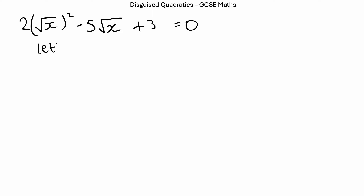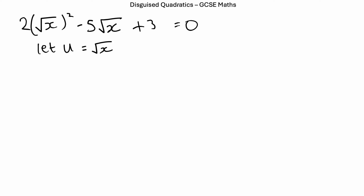What we're going to do is — it kind of feels like you're cheating the system. We're going to let the letter u equal root x. We use the letter u because it's one of the letters we don't commonly use in our algebraic equations. We use y, x, z a lot, but u — not so common. That's why the general rule is that we use u for disguised quadratics. So, we say let u equal root x.